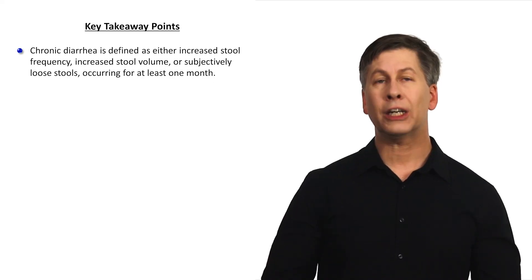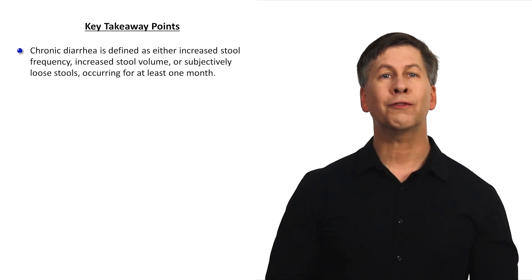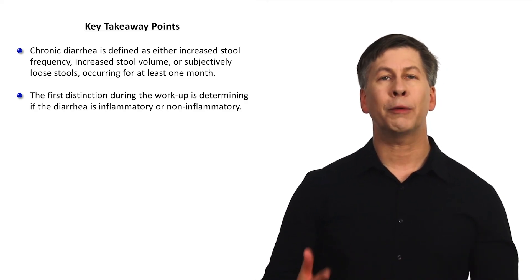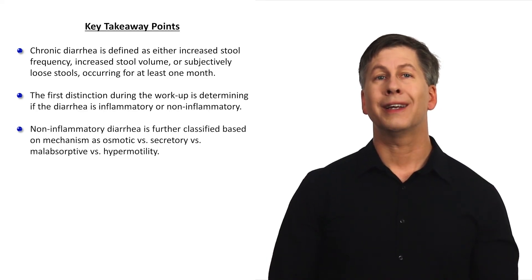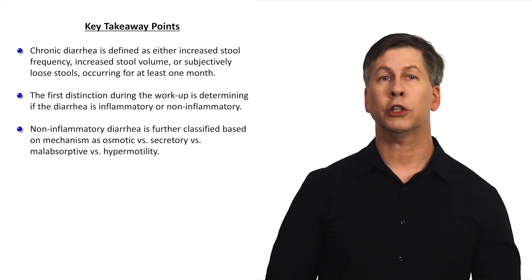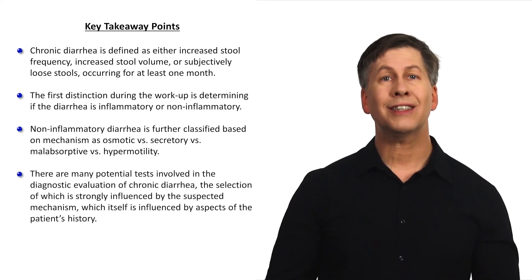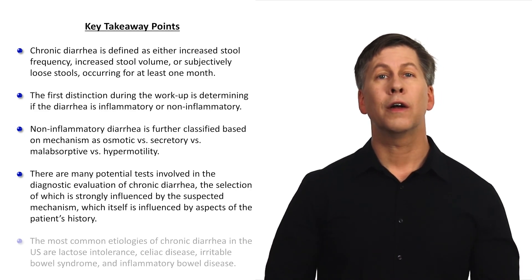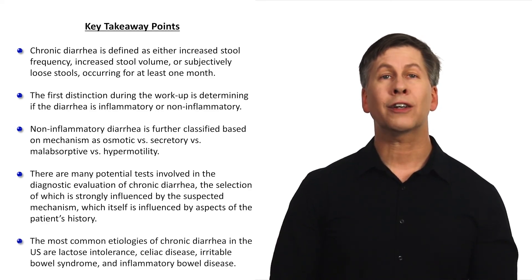The key takeaway points: Chronic diarrhea is defined as either increased stool frequency, increased stool volume, or subjectively loose stools occurring for at least one month. The first distinction during workup is determining if the diarrhea is inflammatory or non-inflammatory. Non-inflammatory diarrhea is further classified by mechanism as osmotic, secretory, malabsorptive, or hypermotility, though the distinction between these four is not always clear-cut in practice. There are many potential tests involved, the selection of which is strongly influenced by the suspected mechanism. The most common etiologies in the United States are lactose intolerance, celiac disease, irritable bowel syndrome, and inflammatory bowel disease.